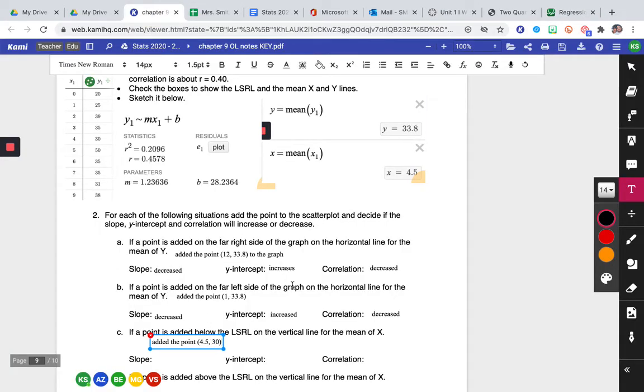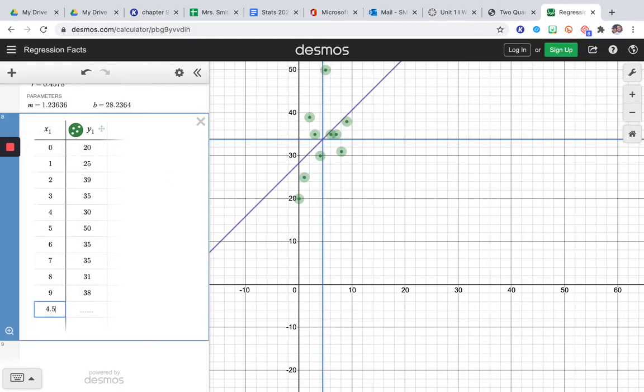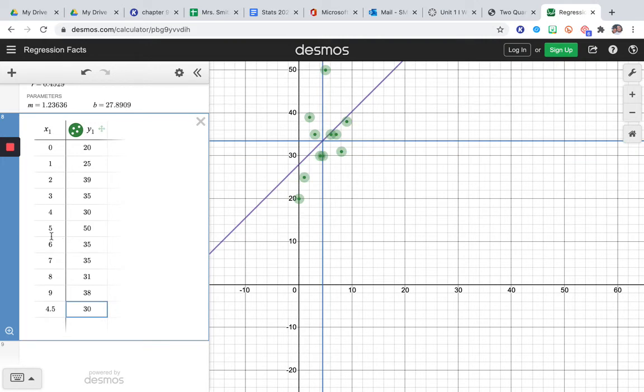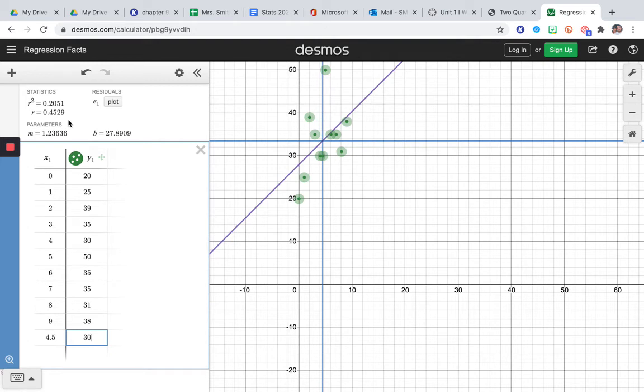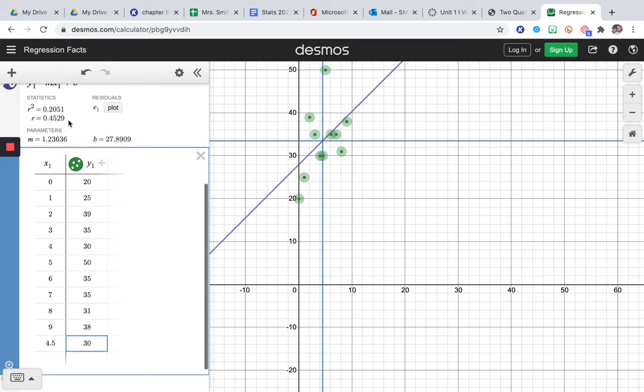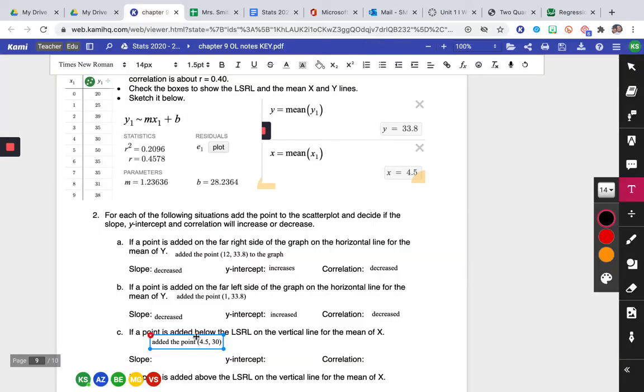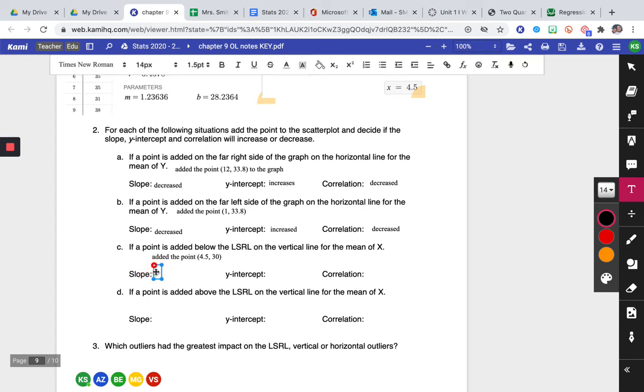So let me add that to the notes. So I'm going to add 4.5, 30 and see what happens to the regression. So 4.5, 30. Look here, our R value is 0.4529, so that's lower. Not much, but it is lower. And look at our slope, our slope is about the same. Our original slope was 1.24, so that's about 1.24. And then our y-intercept was originally at 28.2-ish and it's now at 27.8, so the y-intercept decreased. So let's add that. So the slope was about the same, the y-intercept decreased, and the correlation coefficient decreased.